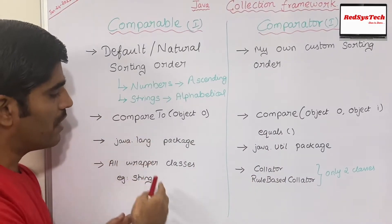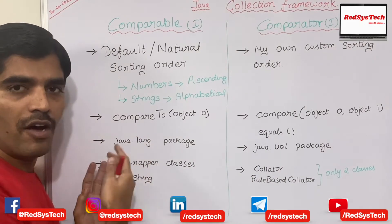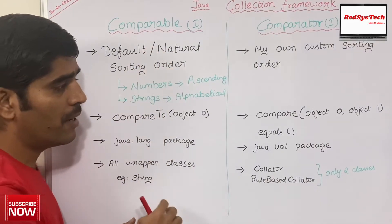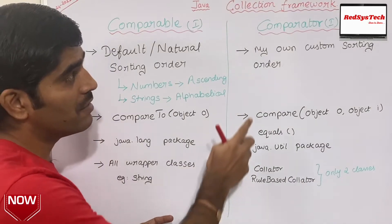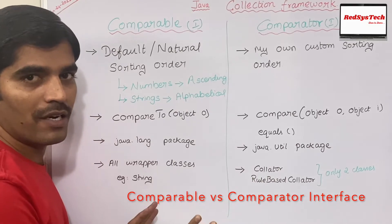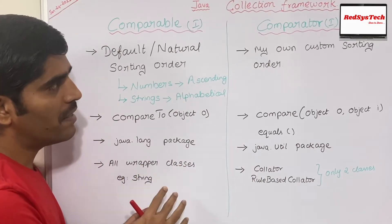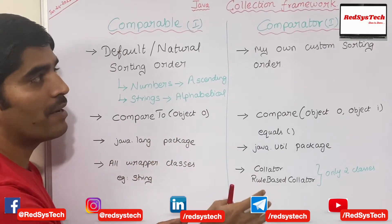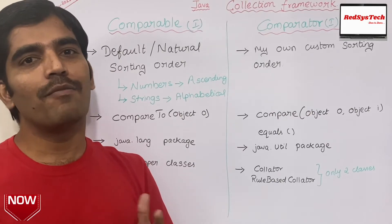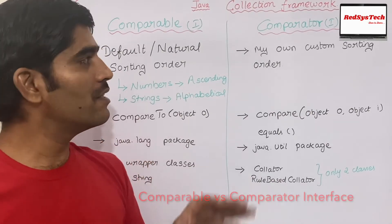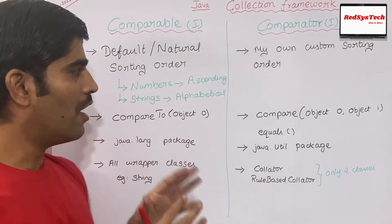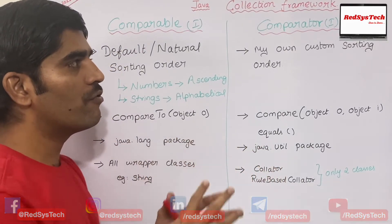All the wrapper classes — for example, String and others — implement the comparable interface. But there are only two classes which implement the comparator interface: they are called Collator and RuleBasedCollator. We never use these classes in real time, but it is important to know the difference between comparable and comparator. If you go for any interview, they will likely ask a question to test whether you really understand and have used these two interfaces in real-time programming.